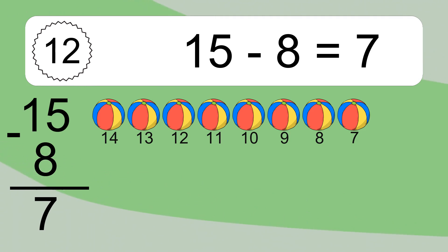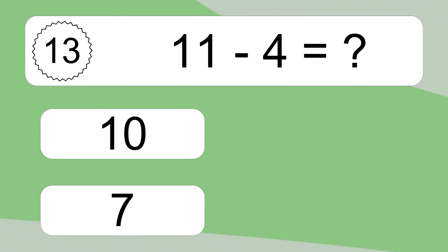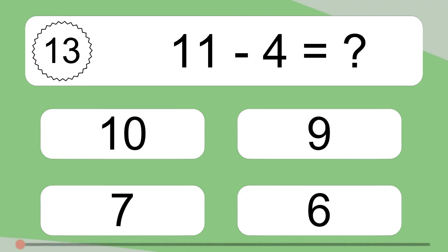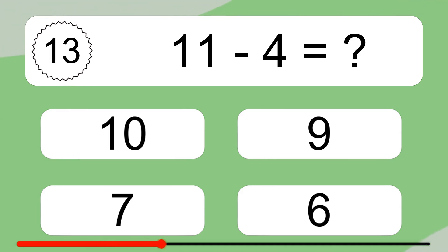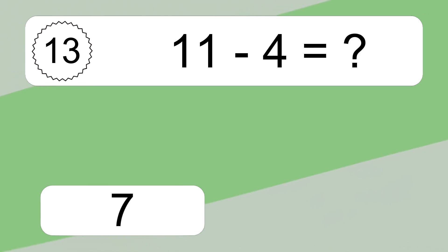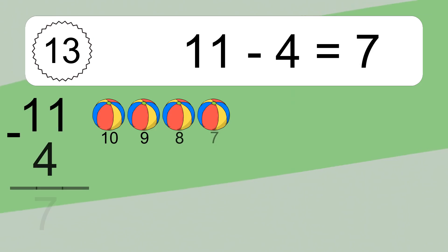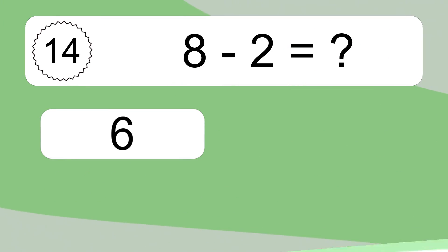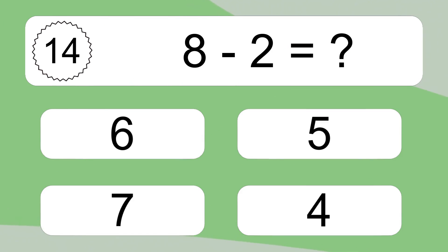11 minus 4 equals what? 11 minus 4 equals 7. Let's count it: 10, 9, 8, 7.